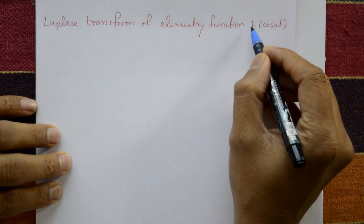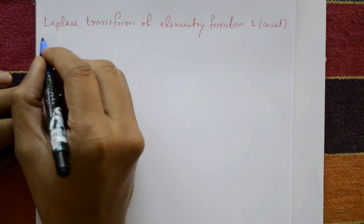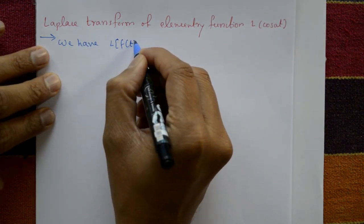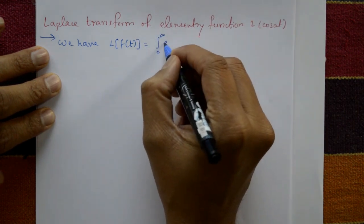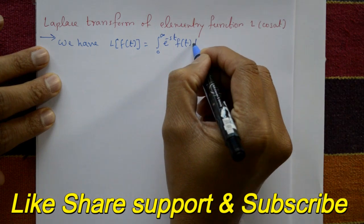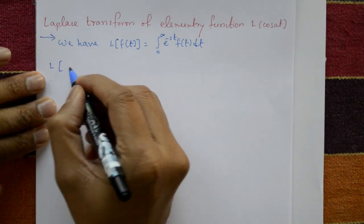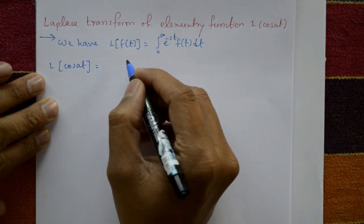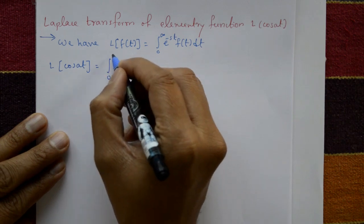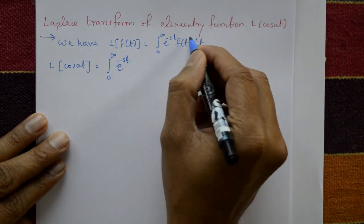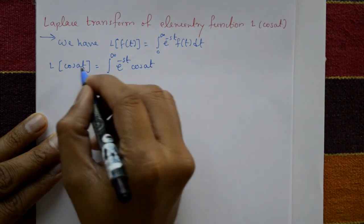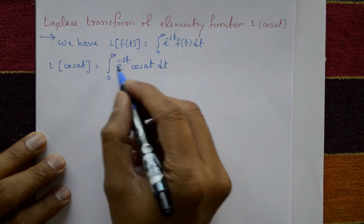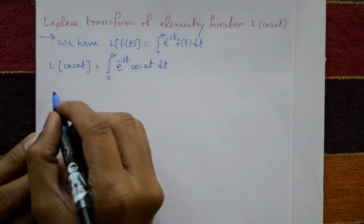Laplace transform of the elementary function: L of cos(at). By definition, Laplace of f(t) is equal to the integration from 0 to infinity of e to the power minus st times f(t) dt. So Laplace of cos(at) equals the integral from 0 to infinity of e to the power minus st times cos(at) with respect to t. We now apply integration using a standard formula.